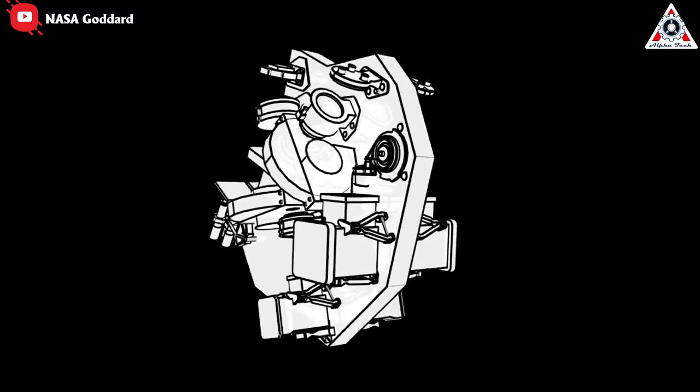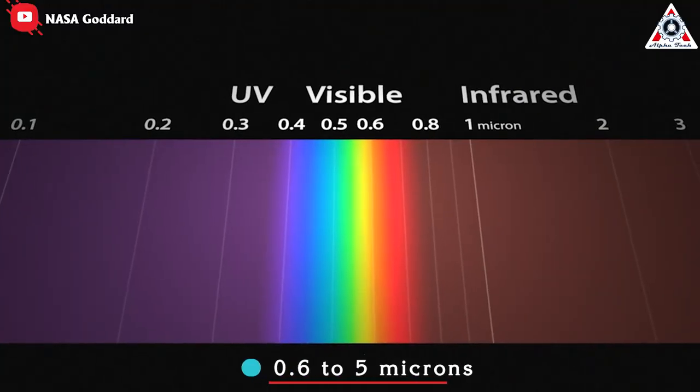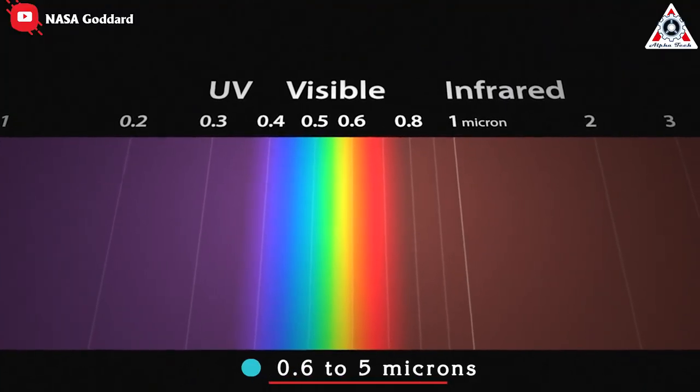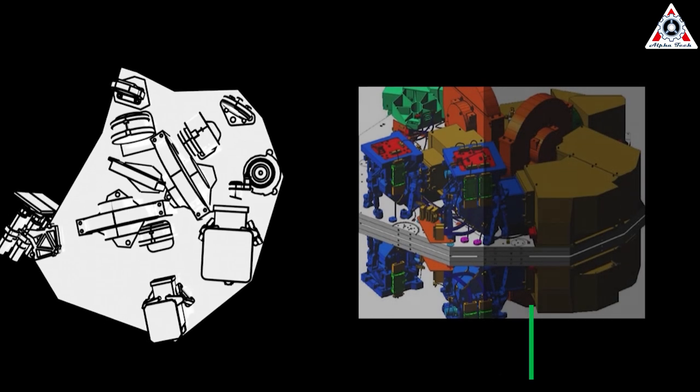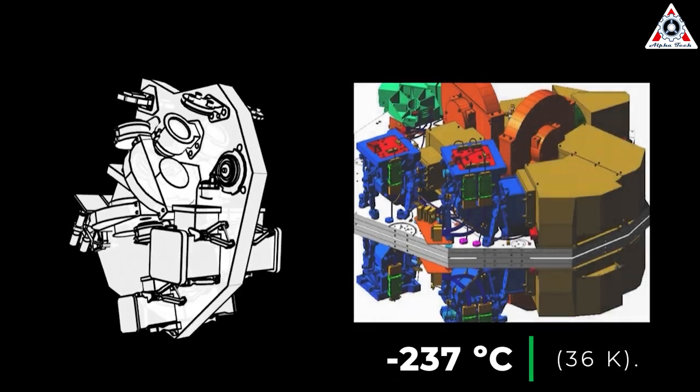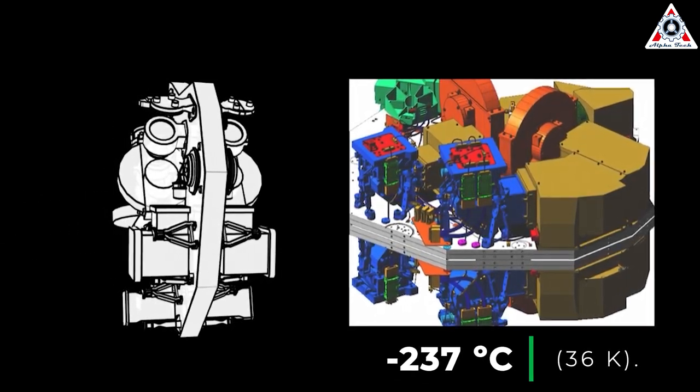NIRCAM will cover the infrared wavelength range of 0.625 microns. But first, it has to cool down to a temperature of just negative 237 degrees Celsius or 36 Kelvin.